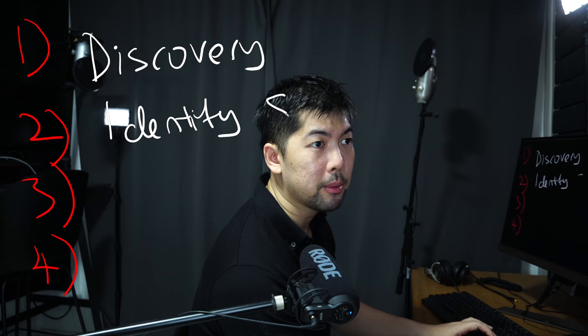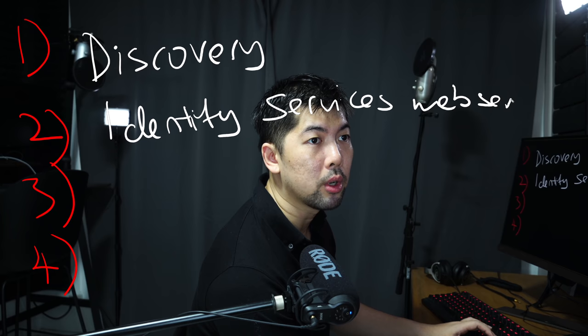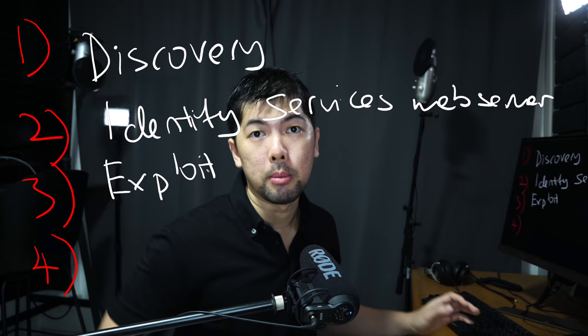The second part is about identifying the services within the device. For example, you may have targeted a server and in that server there is a specific service like a web server — the target you want to go after because of a mispatch, a vulnerability, or misconfiguration within the website. Once you discover all these different services and their versions, you want to find an exploit that is available so you can take advantage of that vulnerability.